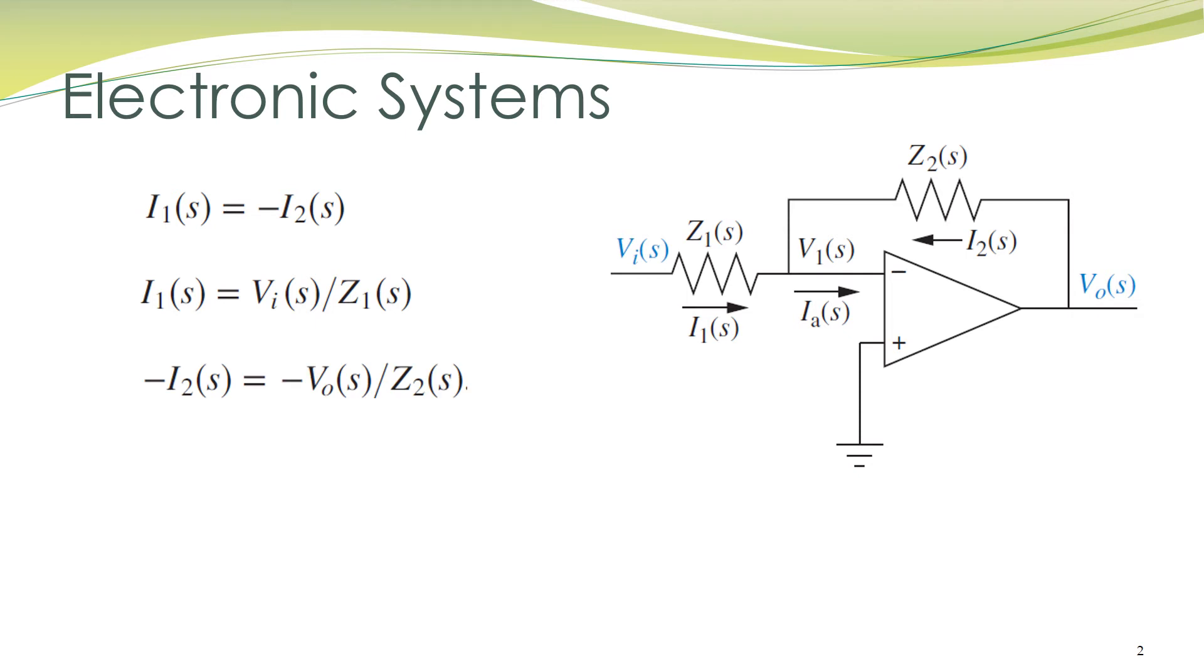And I₂ equals V₀ divided by Z₂. Therefore, the first equation on this slide becomes V₀(s) over Z₂(s) equals minus Vᵢ(s) over Z₁(s), which can be rearranged to write as V₀(s) over Vᵢ(s) equals minus Z₂(s) over Z₁(s). This is the transfer function for the electronic circuit shown in the figure.